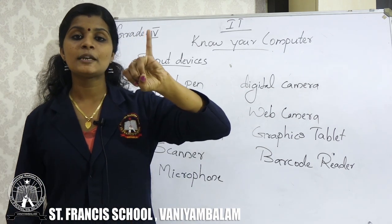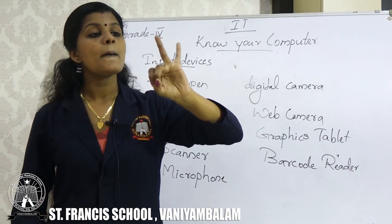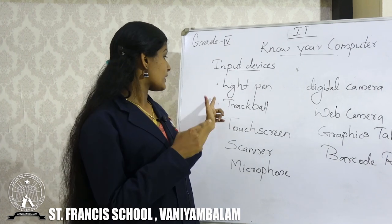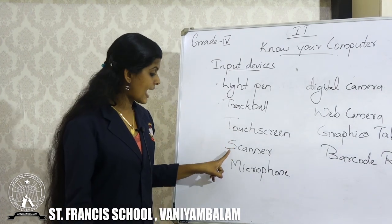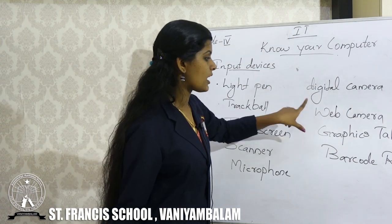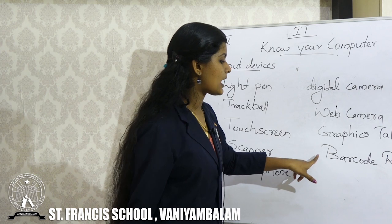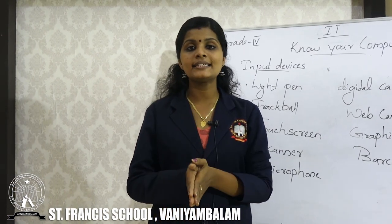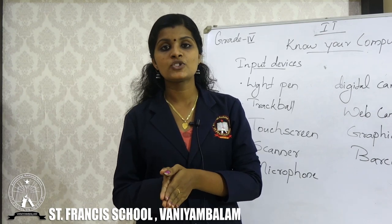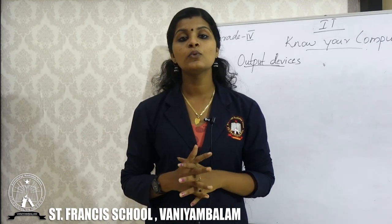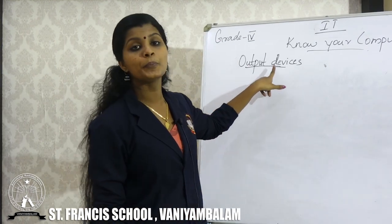So, all the input devices are: keyboard, mouse, trackball, light pen, joystick, touchscreen, scanner, microphone, digital camera, web camera, graphics tablet, and barcode reader. Read your textbook three times — looking at the pictures and reading the definitions will make it very clear. Now we are moving to the next topic: output devices.